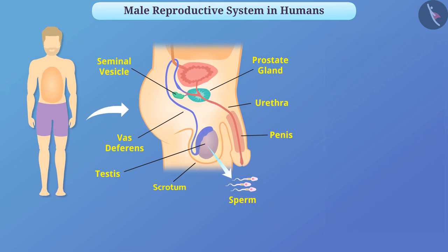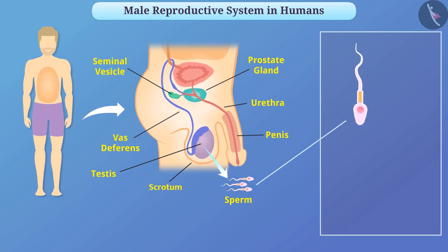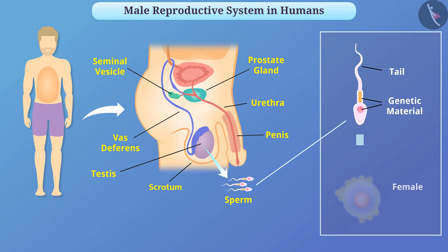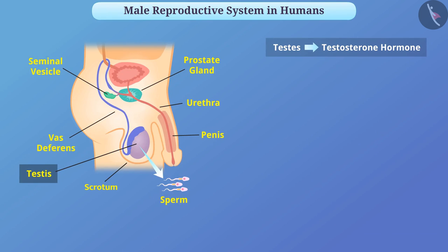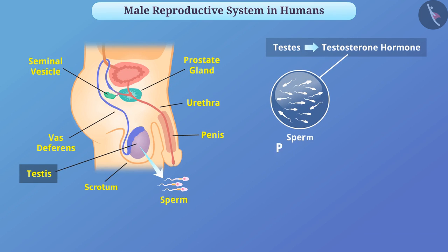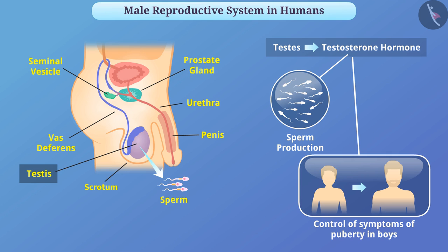A sperm is a microstructure that contains genetic material and a long tail that allows it to move toward the female reproductive cell. The testes also produce a hormone called testosterone, which controls sperm production as well as the symptoms of puberty in boys.